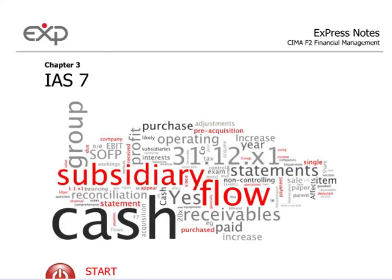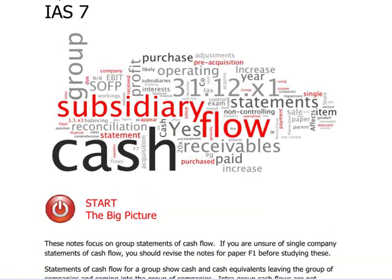Hello and welcome to CIMA F2 Financial Management. We are covering Chapter 3, which is about IAS 7 Statement of Cash Flows. At this level of your CIMA, you're studying the Consolidated Cash Flow Statement. For that, you have to be conversant with what a cash flow is, which you learned in CIMA F1, and also conversant with consolidation. Assuming you know both, we can talk about the Consolidated Cash Flow.